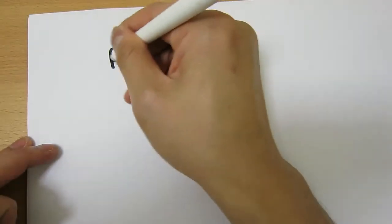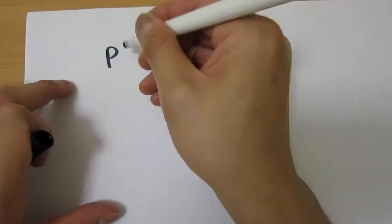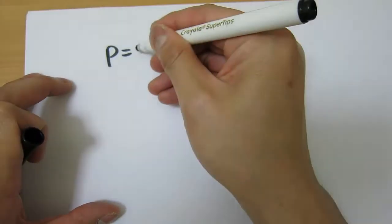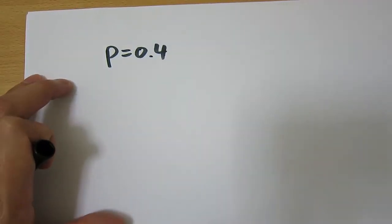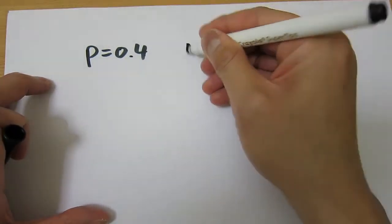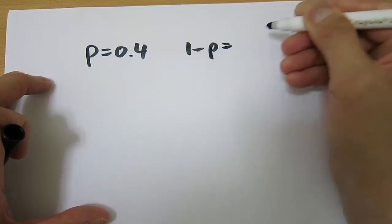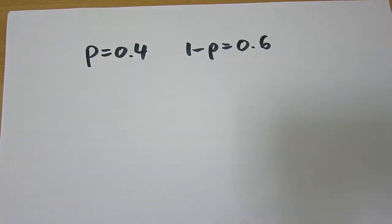They've given us our population proportion. So P is our population proportion, and they've told us that historically our probability of success is 0.4. Our probability of failure must be the opposite of that: 1 minus 0.4, which gives us 0.6.